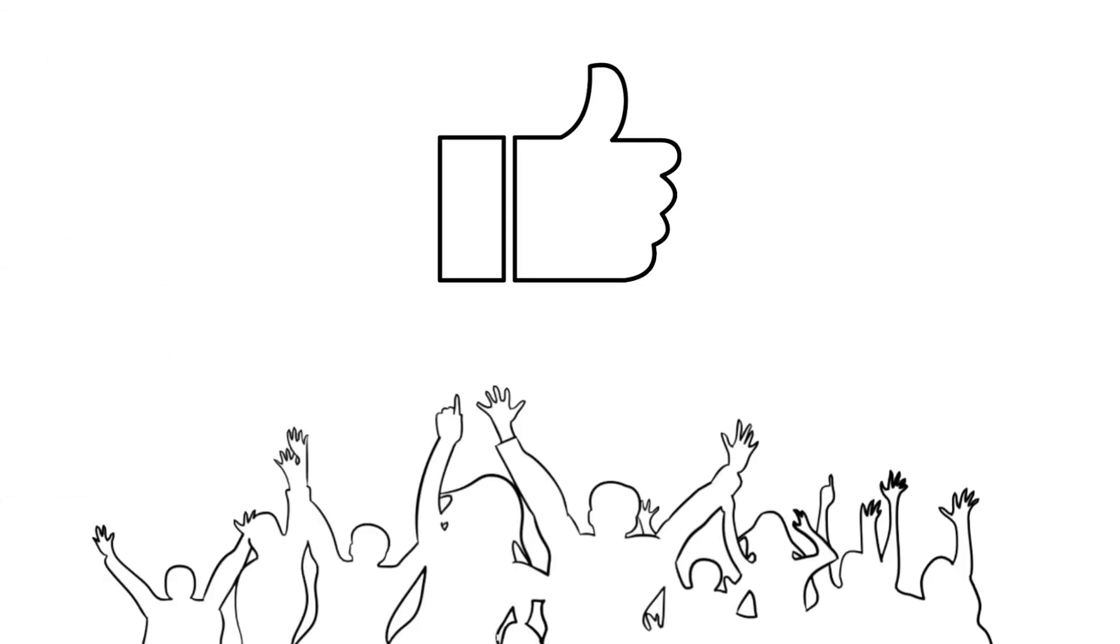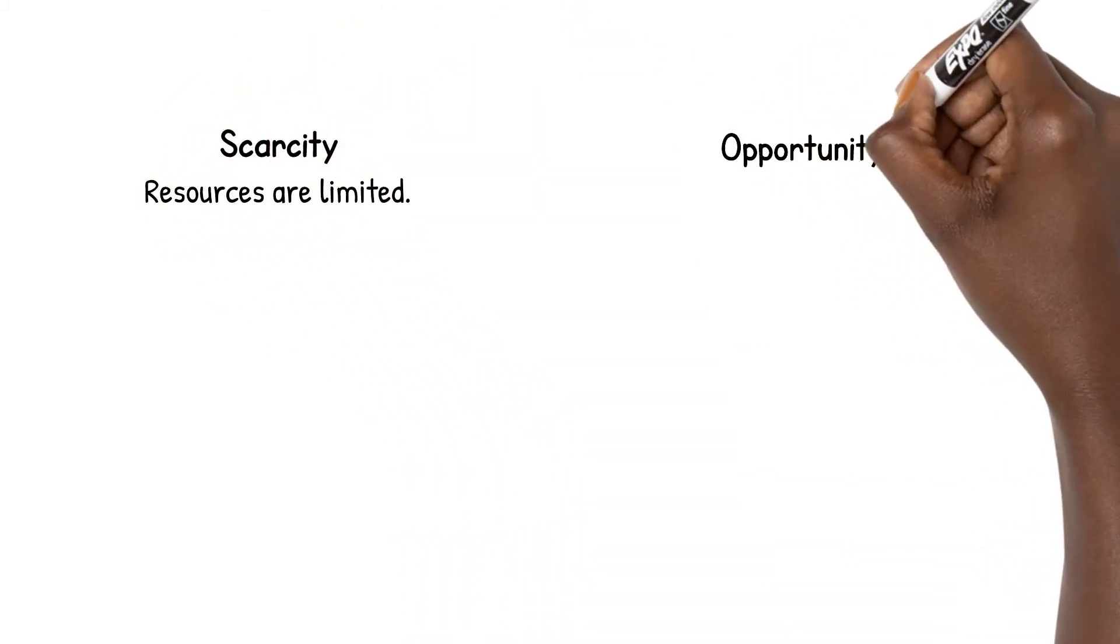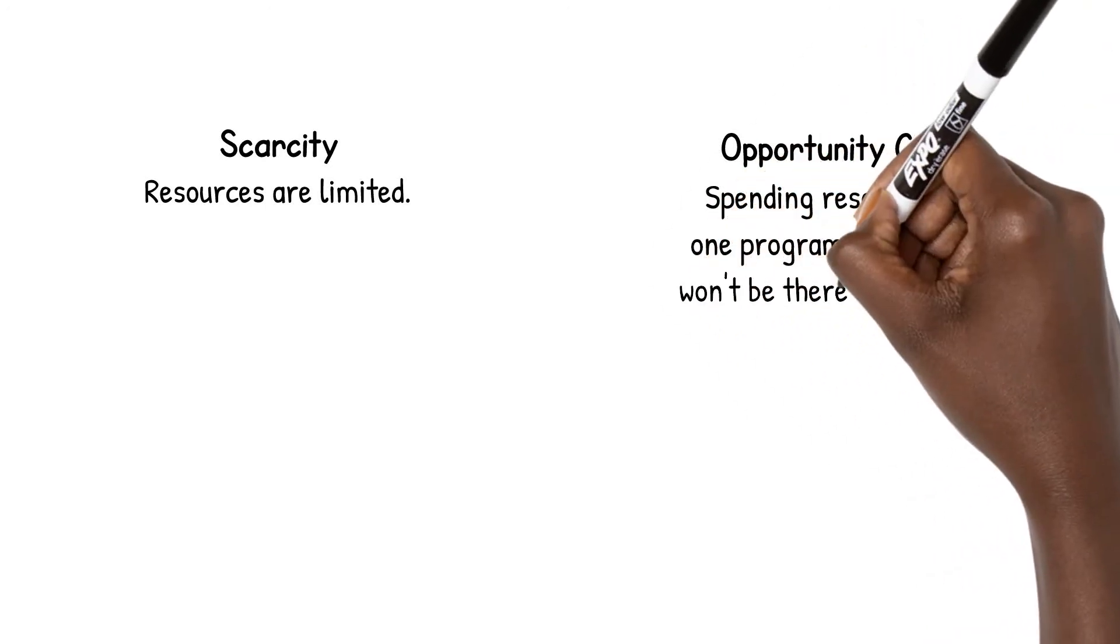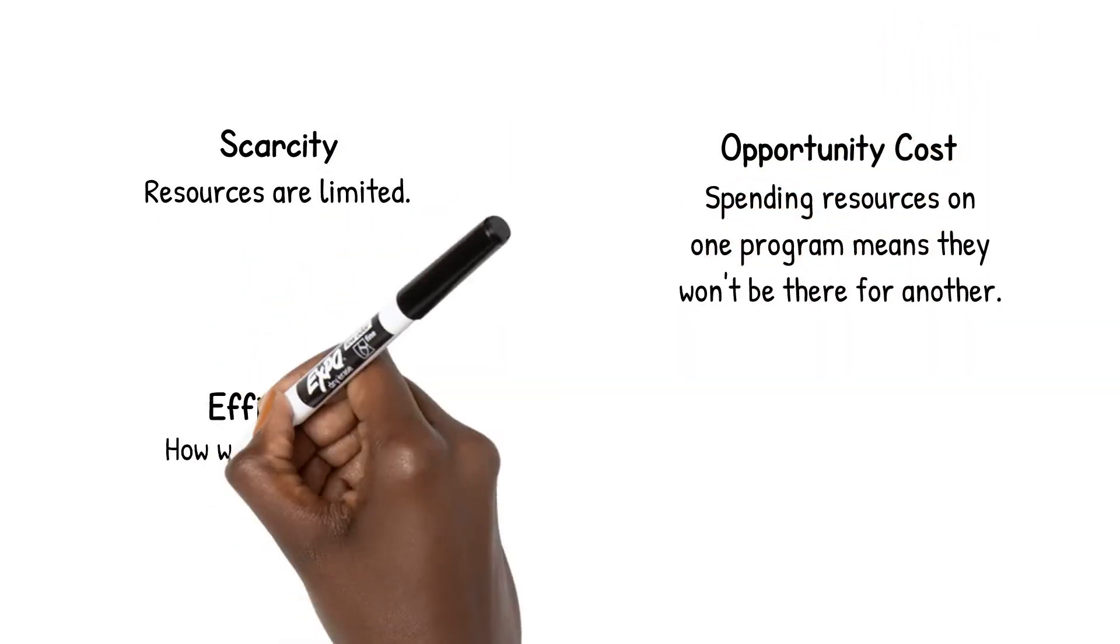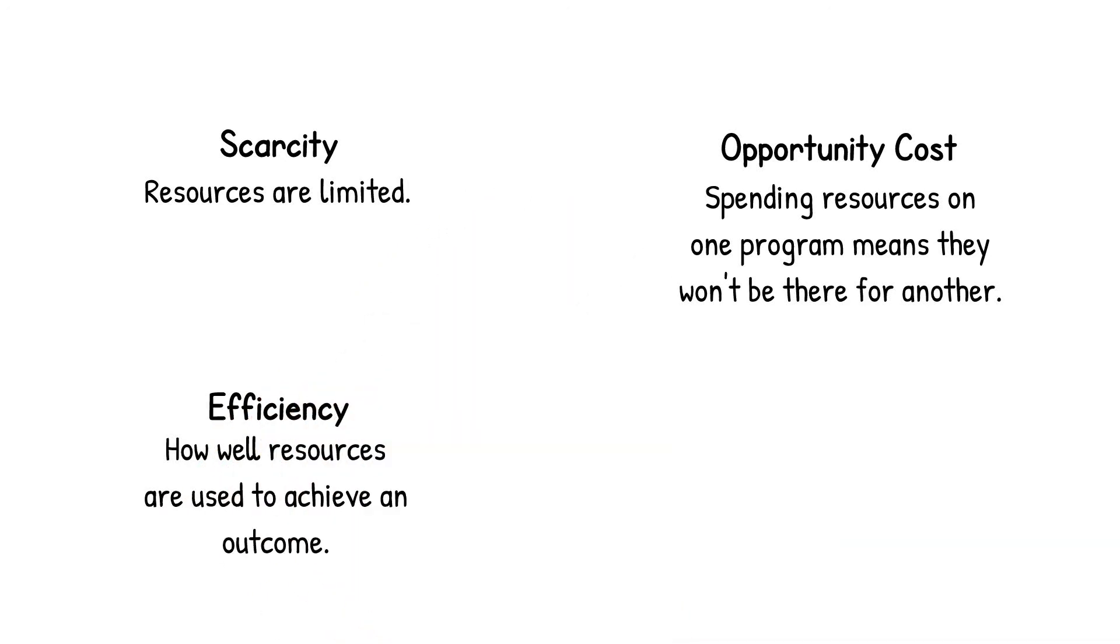Or in short, the goal of utilitarian economics is to provide the most good for the greatest number of people while balancing certain other economic truths. These include scarcity, the reality that resources are limited. Opportunity cost, where spending resources on one program ultimately means they can't be used for another. Efficiency, the theory that we should choose the programs that get us the greatest benefit for the least dollars. And finally, equity, the principle of fair distribution of resources or benefits among different individuals or groups.